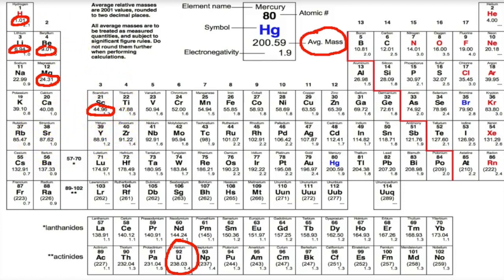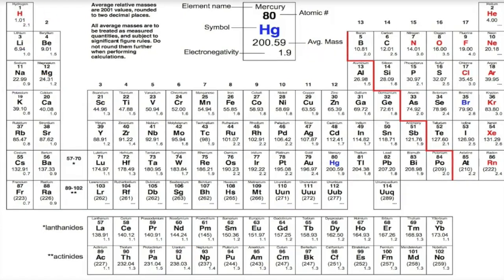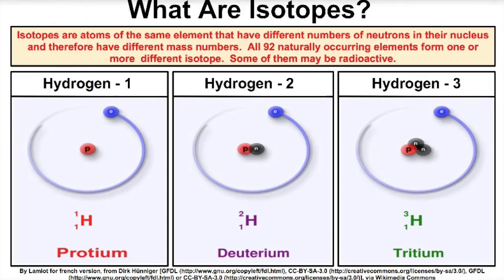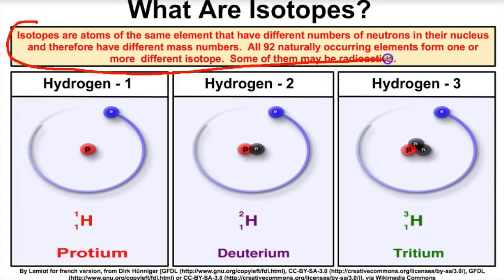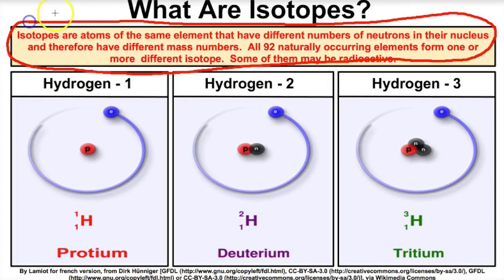So what we're going to do today is talk a little bit about isotopes. Isotopes are atoms of the same element that have different numbers of neutrons in their nucleus. Because they have different numbers of neutrons, they're going to have different atomic masses or mass numbers. All 92 naturally occurring elements form one or more different isotopes, and some of those might be radioactive.